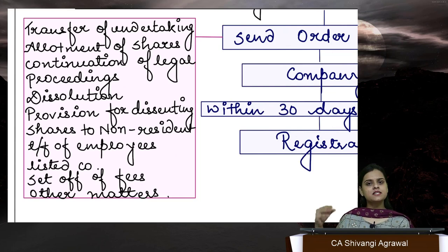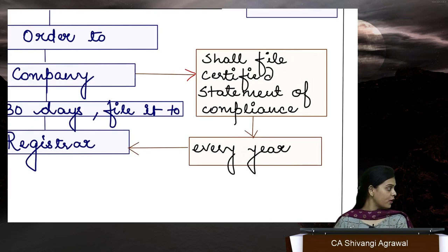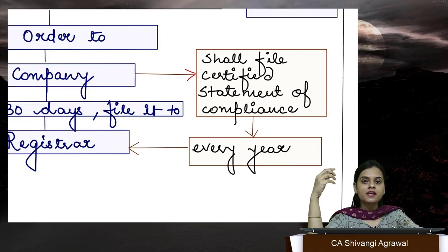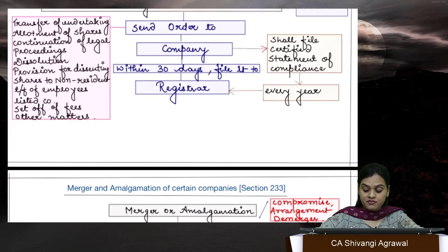Set off of fees: suppose a + b = c. We have to incorporate a new company c — incorporation fees apply. But companies a and b are going to dissolve, so whatever fees they have paid can be set off. The scheme of amalgamation or merger may take quite some time — stretching 2 to 3 years. At the end of every financial year, within 200 days, there has to be a certificate of compliance certified by a CA, CS, or CMA, to be filed with the ROC — confirming that whatever scheme was sanctioned by the tribunal, the company is following the same.